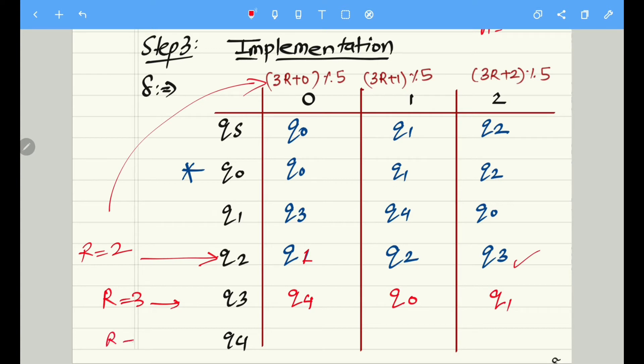Now let's talk about Q4 state where remainder is 4. When we put the value of 4 here, it becomes 3 fours are 12. 12 plus 0, that is 12 only. 12 mod 5 is corresponding to Q2, that is remainder 2. Similarly it will be Q3 over here and Q4 over here.